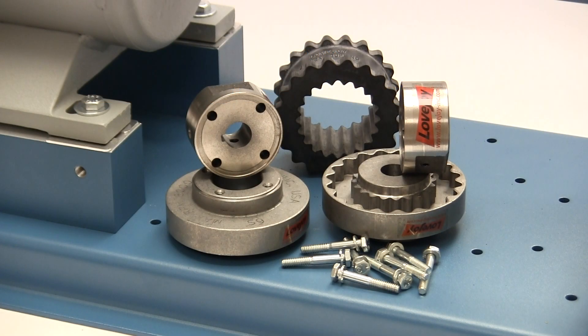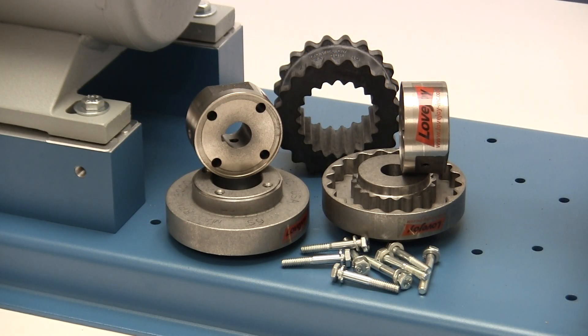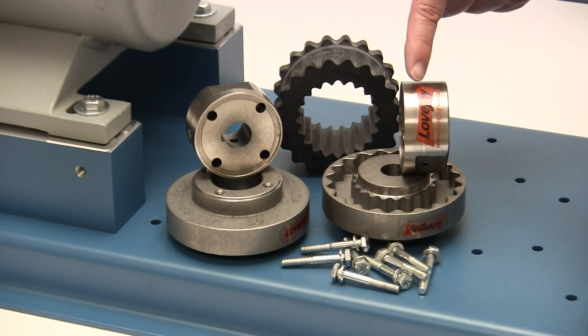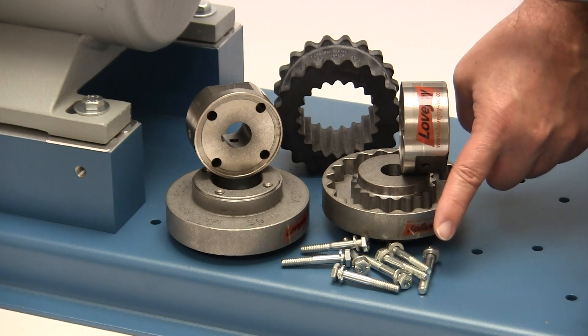The following components are provided with the purchase of your Lovejoy S-Flex endurance style coupling. You should have two SC spacer flanges, two SCH spacer hubs, a sleeve, and hex head bolts and washers.